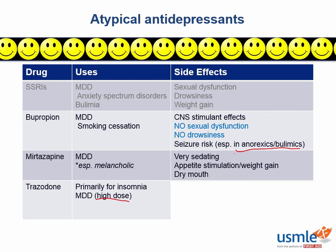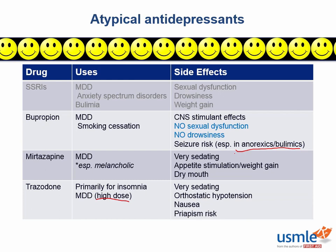Trazodone is so sedating that it's mostly just used as a sleep aid. It also has another cluster of side effects including orthostatic hypotension, nausea, and priapism. Priapism is the one that everybody remembers — it's actually the least common of all of them, but it's hilarious because you can remember the drug as Trazabone. Next year the psych clerkship directors are going to try desperately to reeducate you, but it's not going to work because, you know, y'all have dirty minds.